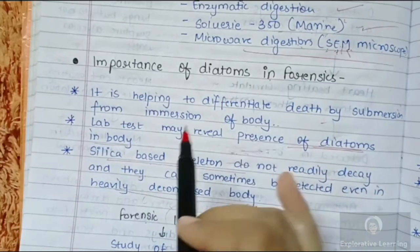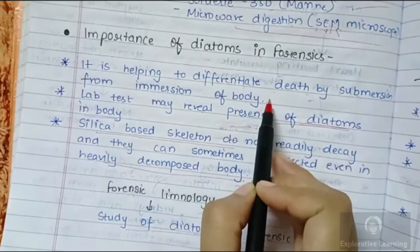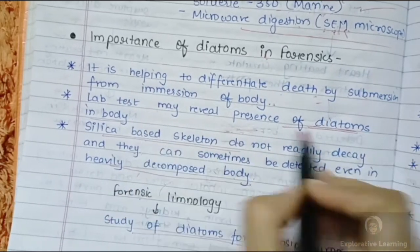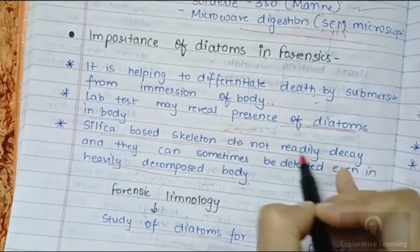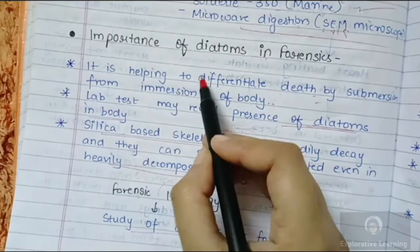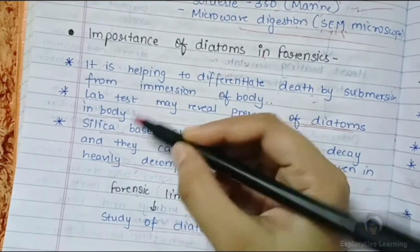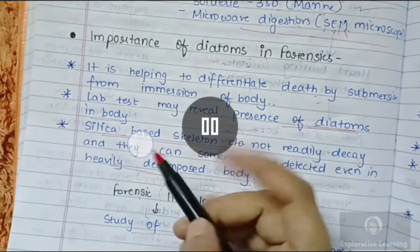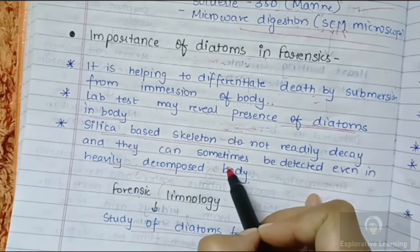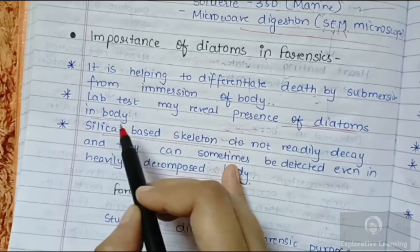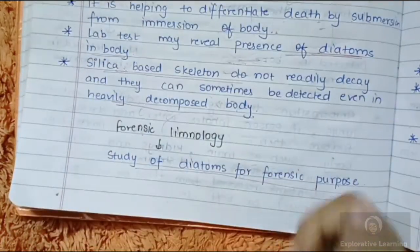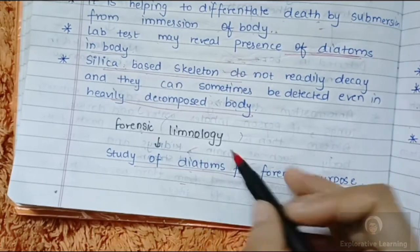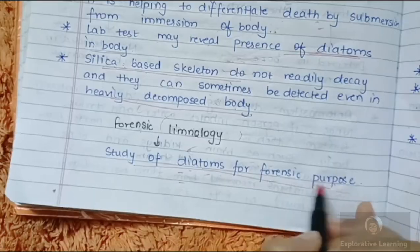The importance of diatoms in forensic science includes: helping to differentiate death by submersion from mere immersion of the body, allowing detection of the cause of death. Lab tests also reveal the presence of diatoms in the deceased. Since silica-based skeletons do not readily decay, diatomaceous earth — formed by deposition of silica-containing frustules — persists even in heavily decomposed bodies and can indicate drowning. The field dealing with the study of diatoms for the criminal justice system is called forensic limnology.